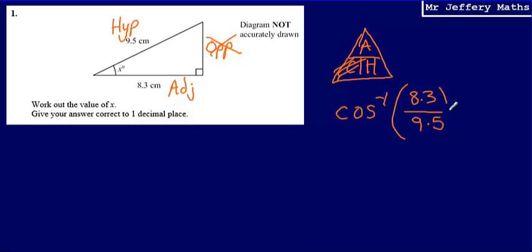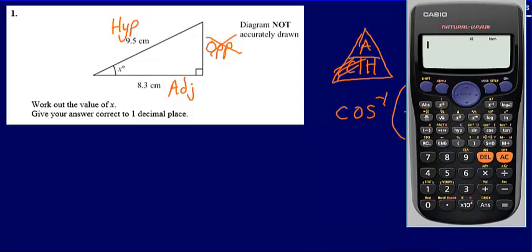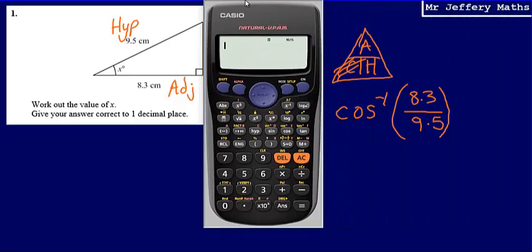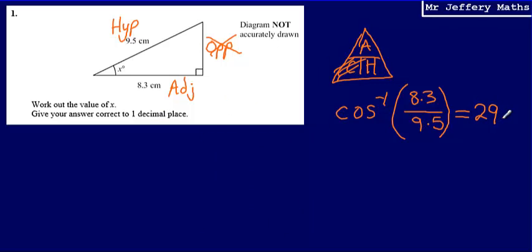And this is going to give us a value of, so typing this into the calculator, 8.3 divided by 9.5. And that's going to give us an answer of 29.11. We're asked to give it to one decimal place though. So we're going to just say that this is equal to 29.1 degrees. So final answer, 29.1.